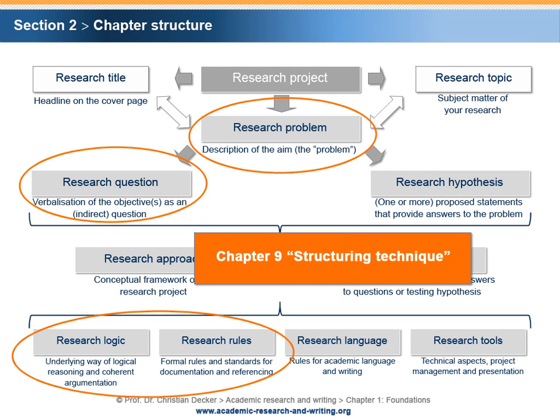In Chapter 9, a common structuring technique is introduced. Different aspects of academic research are affected: the research problem, the research question, the research logic, and the research rules. Thereby, Chapter 9 combines different aspects of academic research.